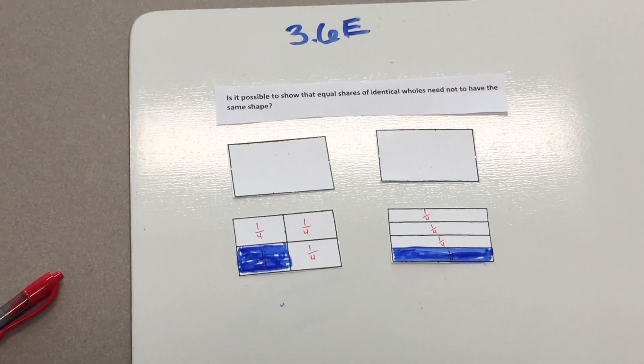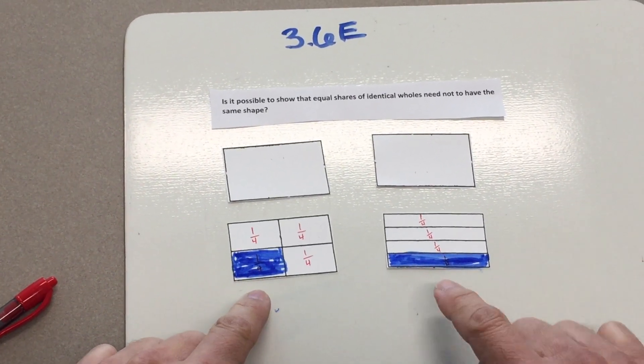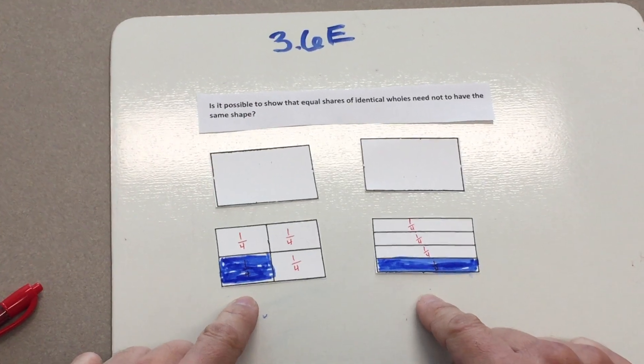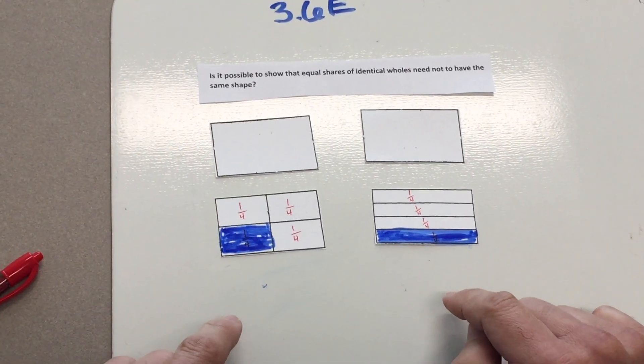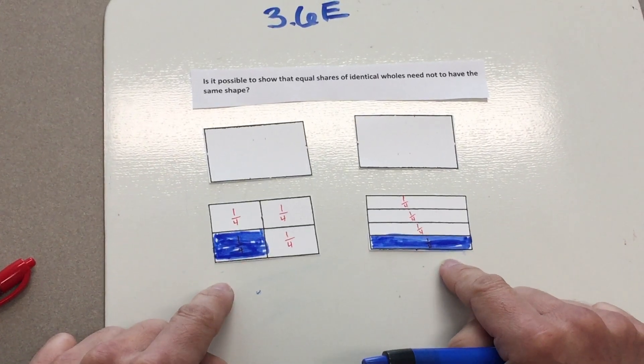The answer to the question is yes. The shaded parts share areas of equal sizes because the wholes are congruent and were each partitioned into four equal parts.